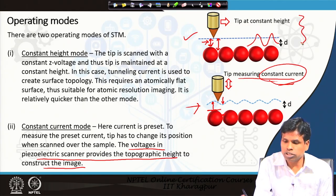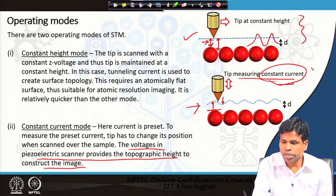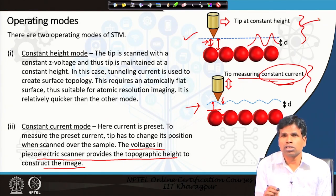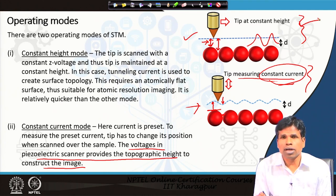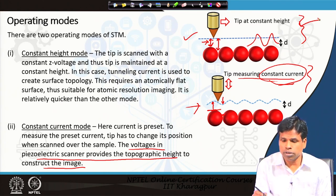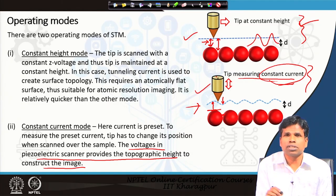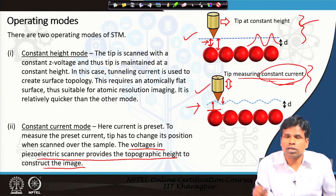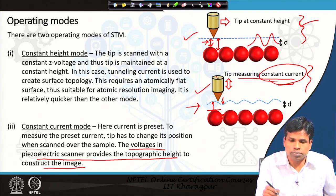So basically we have two modes: constant height mode and constant current mode. Constant height mode is suitable for high resolution imaging as long as the sample is atomically flat. Constant current mode is for unknown samples — it should be done first, and if the sample is atomically flat or very smooth, then constant height mode can be utilized for that sample.